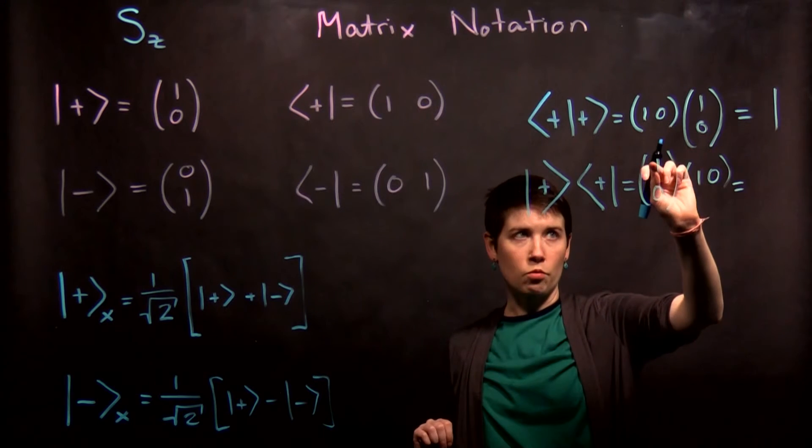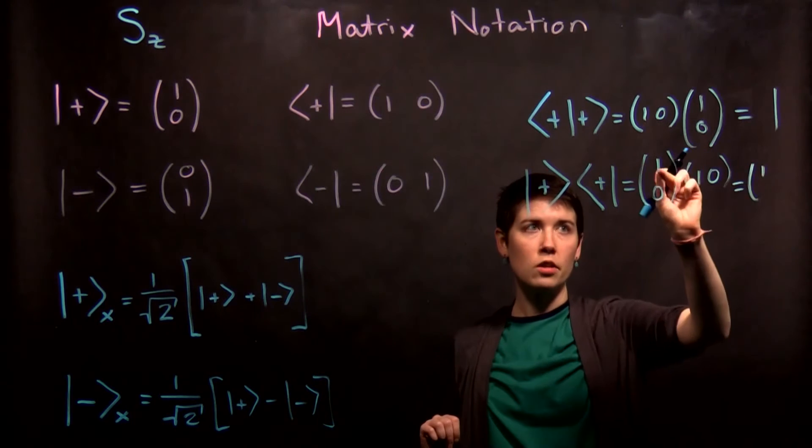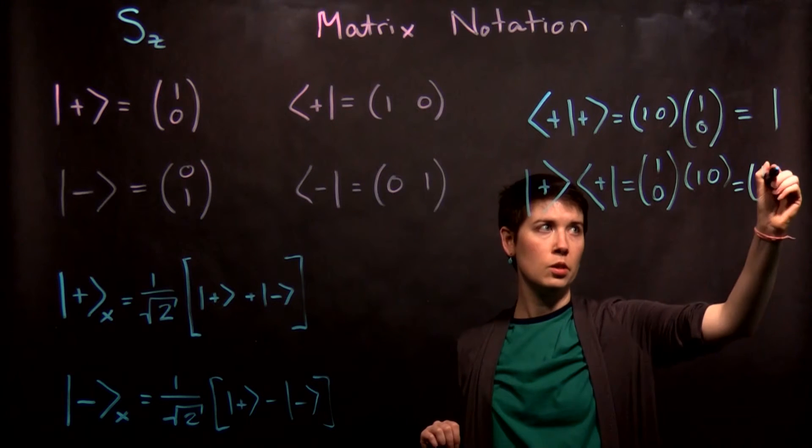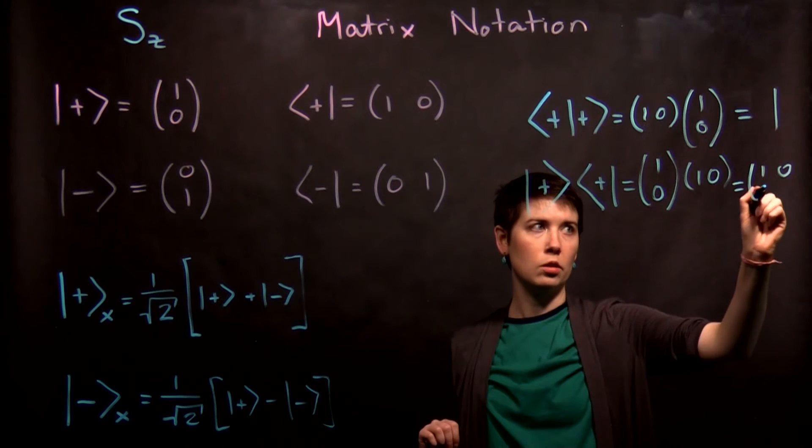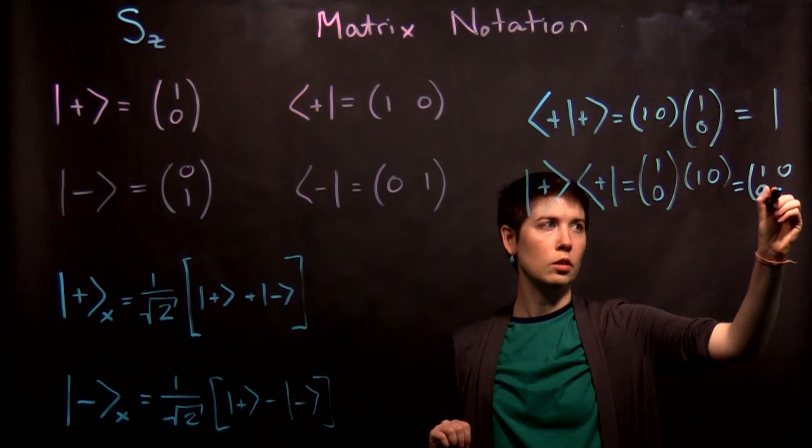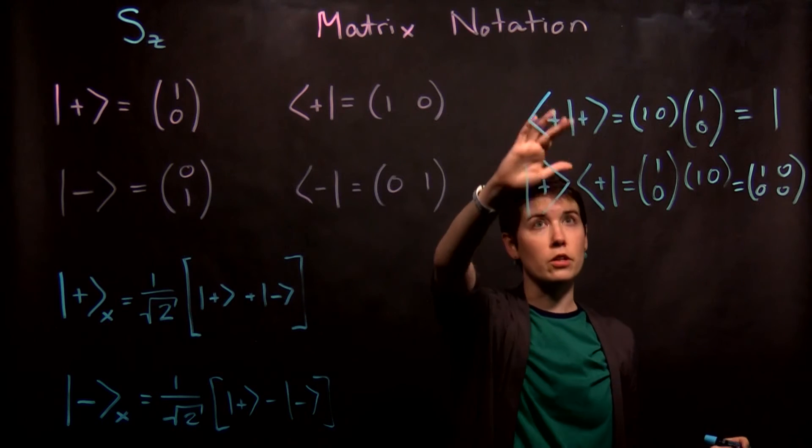This is in fact going to give us a matrix result. First we have row, column, this gives us one. Then we have row, column, zero. Row, column, zero. Row, column, zero. So notice that the order matters.